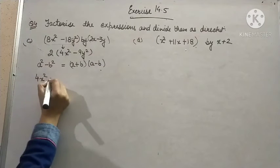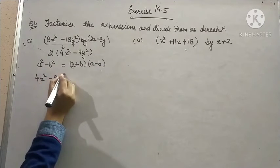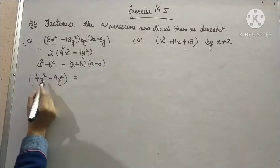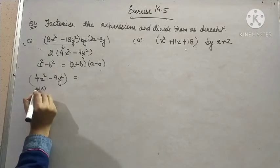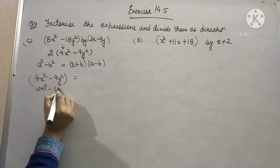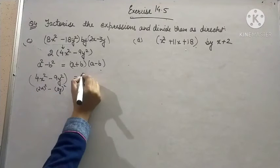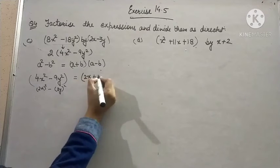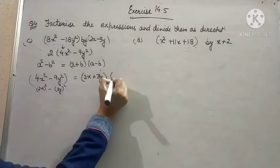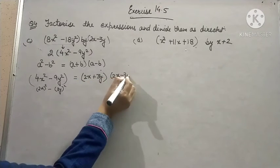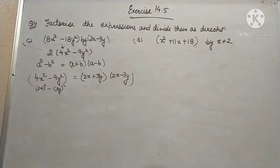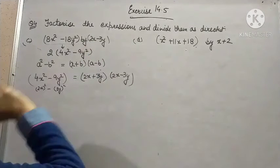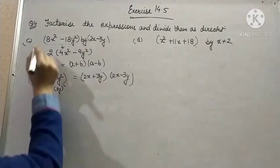So, 4x square minus 9y square can be written as 4x square is the square of 2x, and this is the square of 3y. So, it can be written as 2x plus 3y into 2x minus 3y. This is what I told you in the previous problem as well, that one factor will be the same which is given to us.